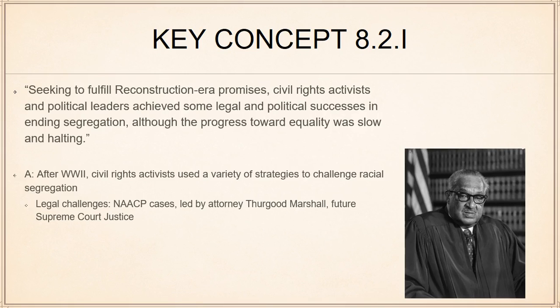Racial segregation is divided into two types: de facto segregation and de jure segregation. De jure segregation — segregation by law — exists in the South and is going to be the first target of the Civil Rights Movement. De facto segregation is what we still have today, which is segregation by custom — not legally enforced, but nevertheless still observable.